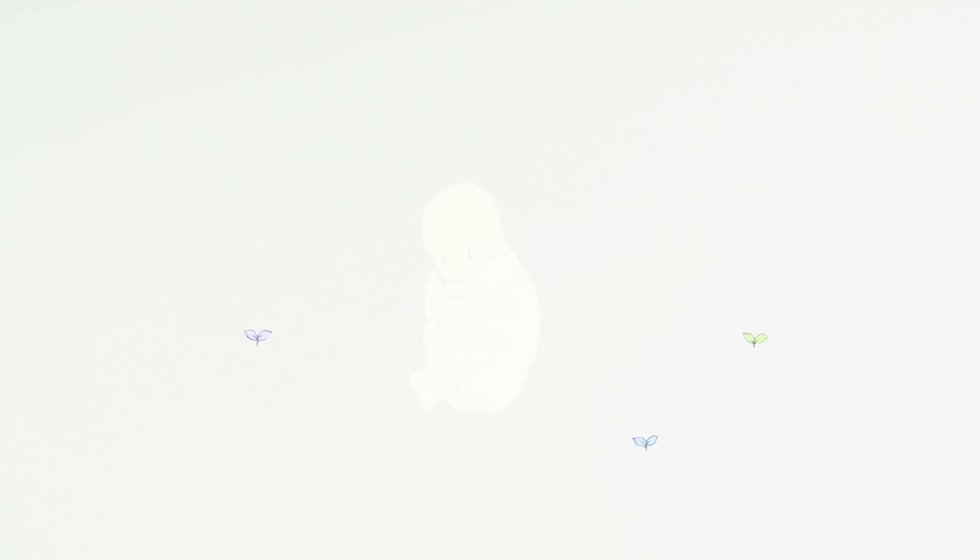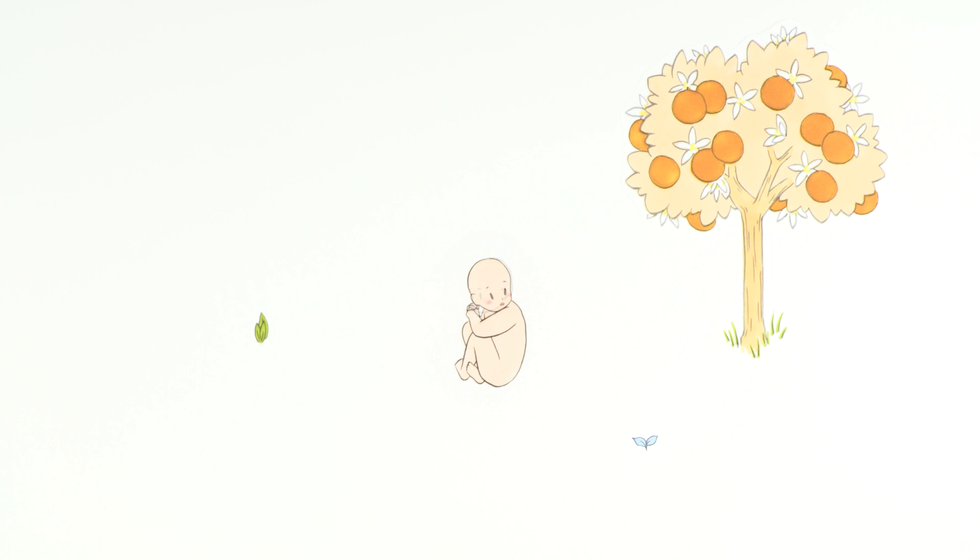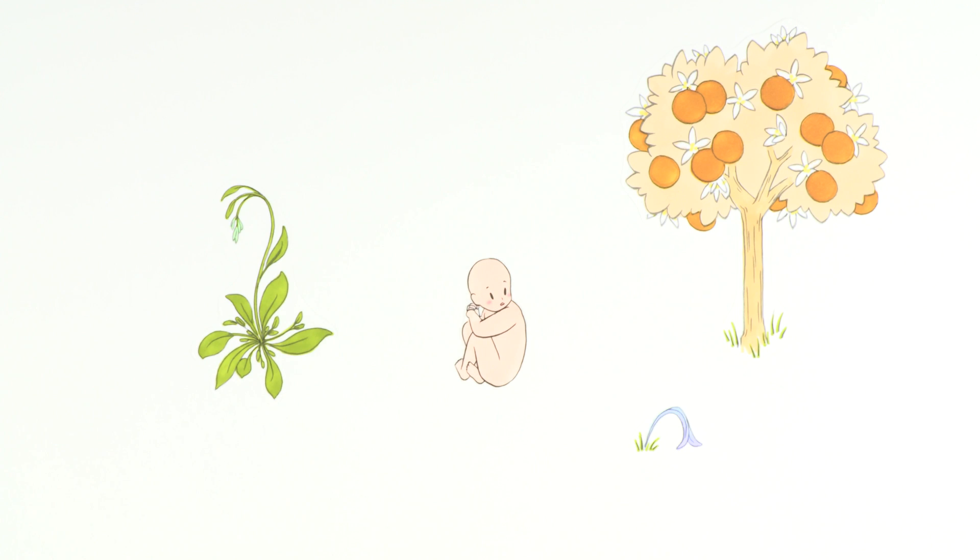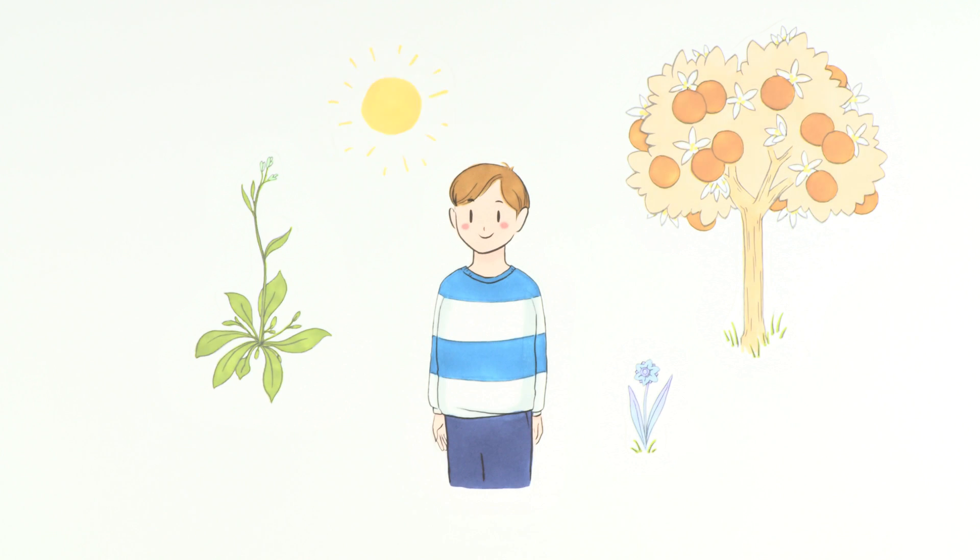So, what happens during pregnancy? What a woman eats, stress, illness, treatments and the environment can influence the health of the baby, and it can also affect the growth and long-term health of the child.